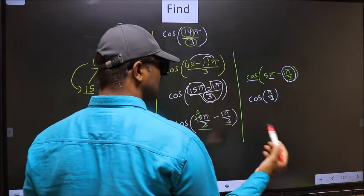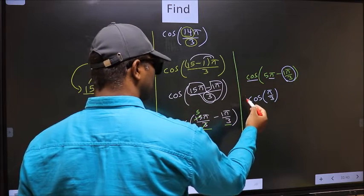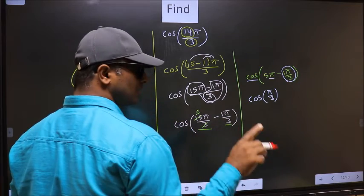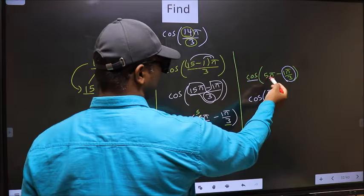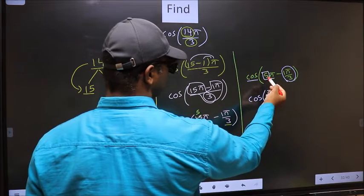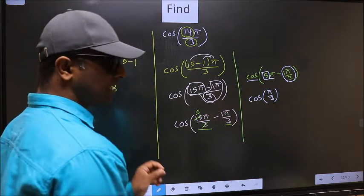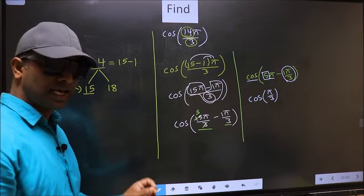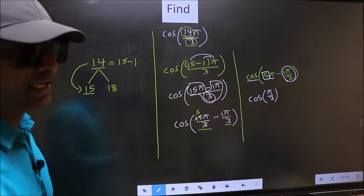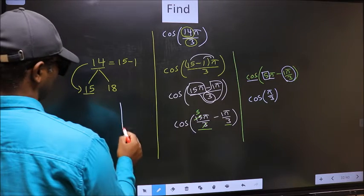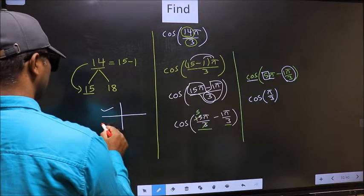Now the question arises will we get here plus or minus. To answer that we should look at the number before π which is 5. And 5 is odd. And all the odd multiples of π they lie in 2nd or in 3rd quadrant.